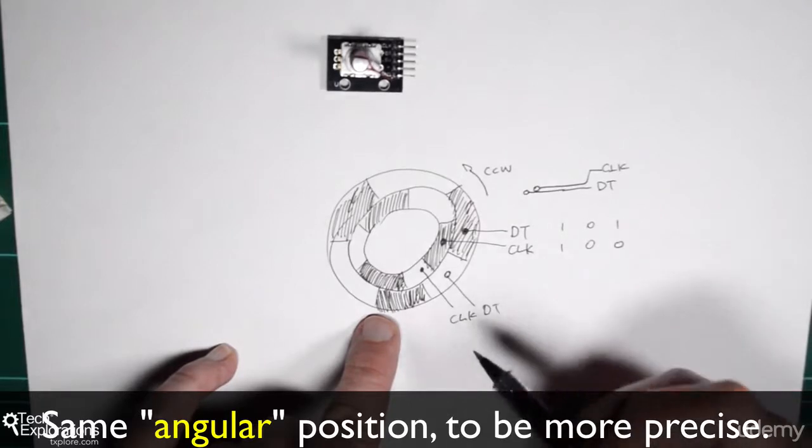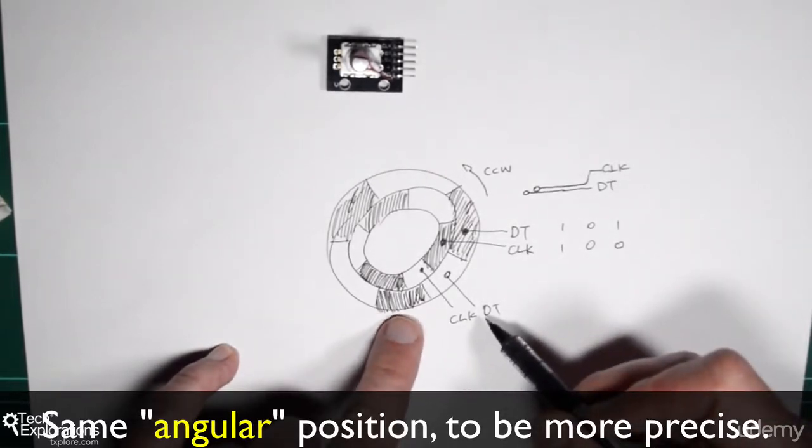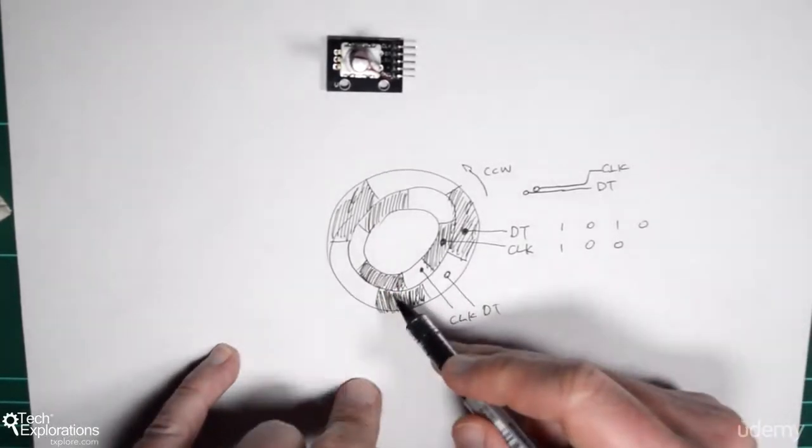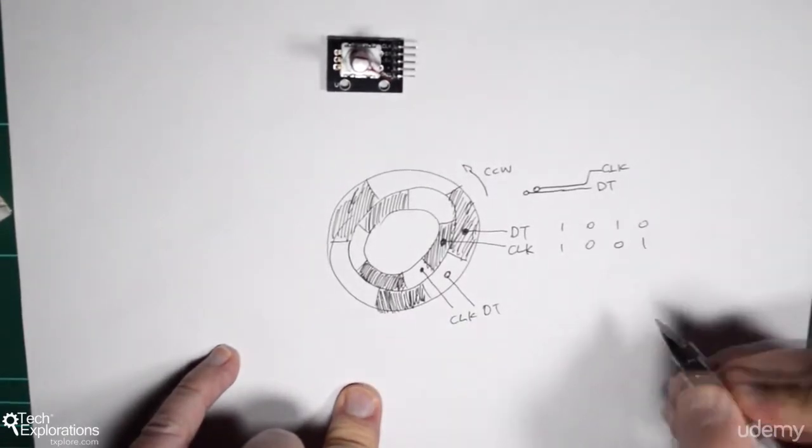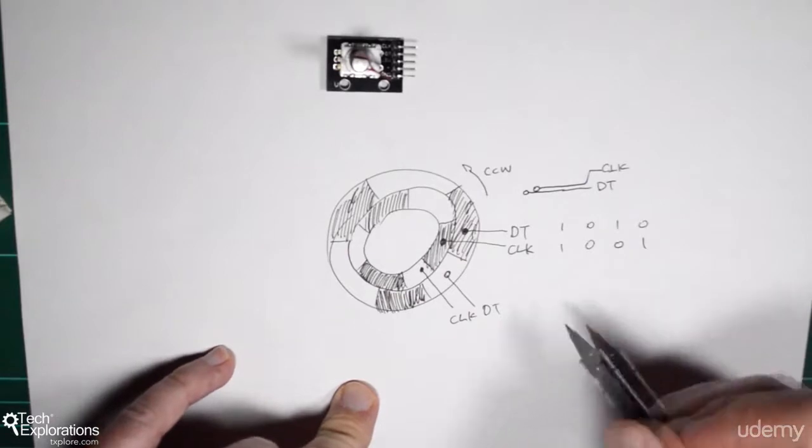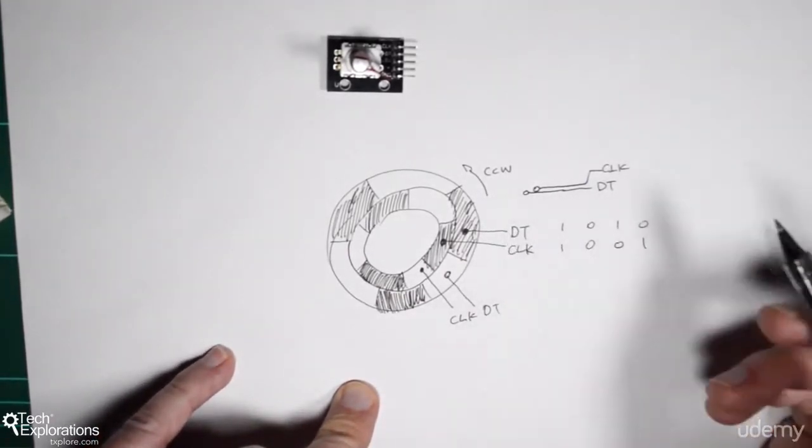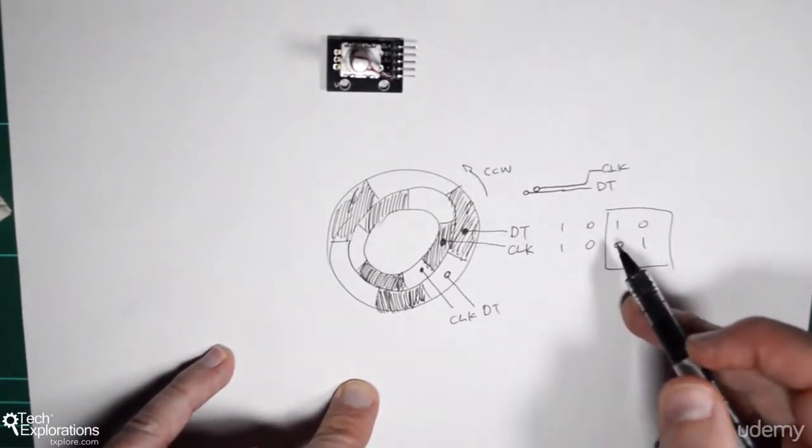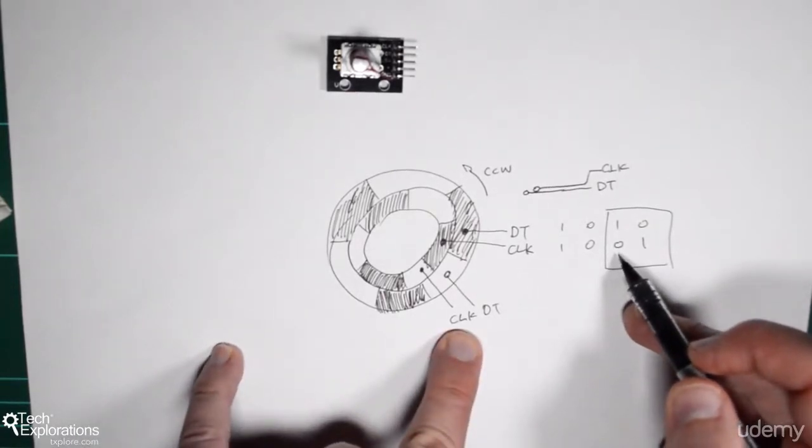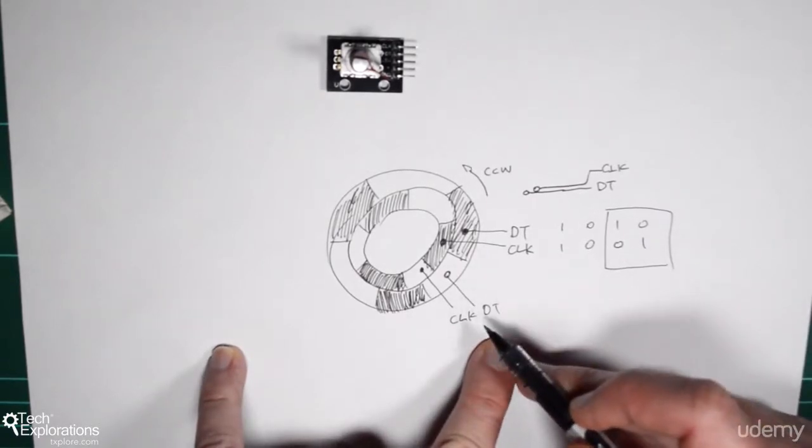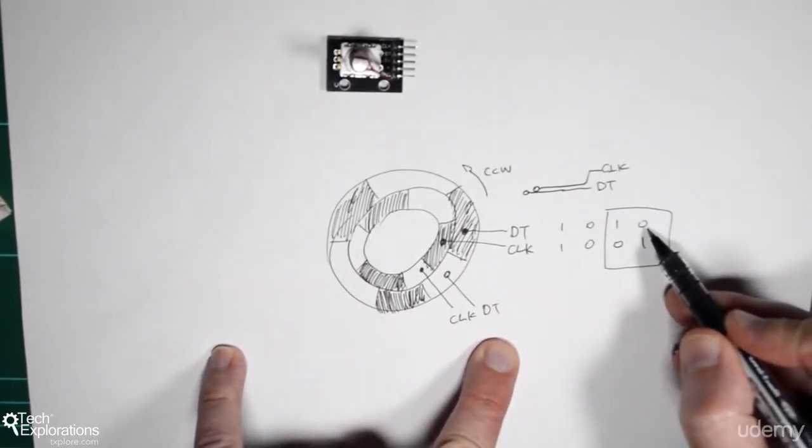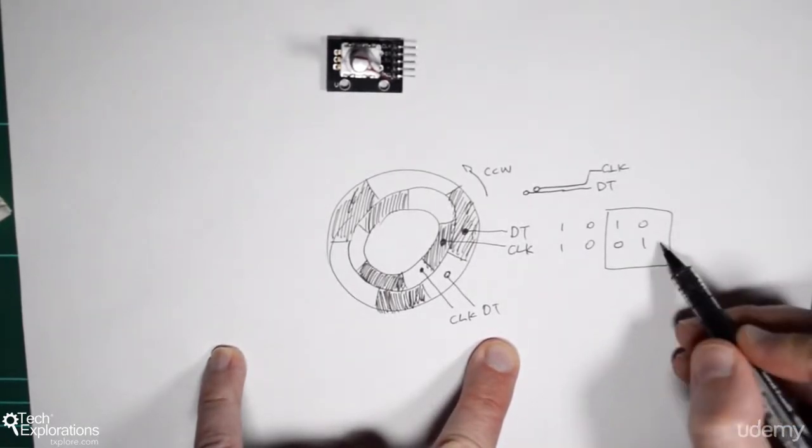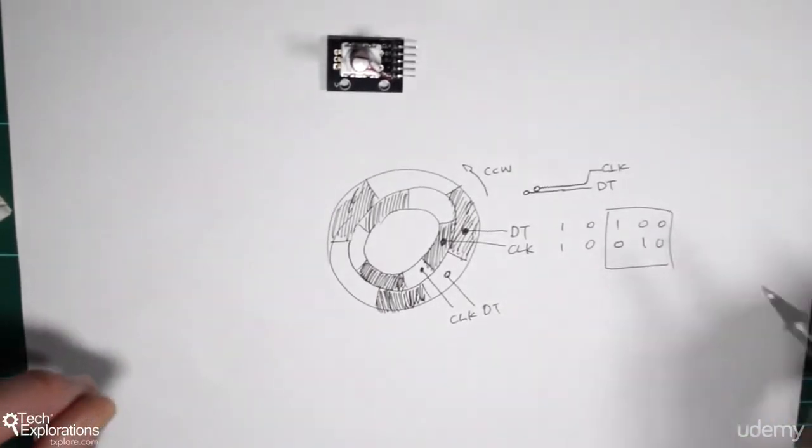Now a little bit later, as the wheel is turning, the DT is going to run out of conductive pad and it's going to become zero, while CLK is still on its own conductive pad and it's going to still be one. So you can see that when the wheel is turning, when the disk is turning counterclockwise, this is what's happening. DT is becoming one first, while CLK is still zero. And then when they exit on the other side of the pads, DT is going to become zero first and CLK is going to still be one until eventually it becomes zero and both of them are zero in between pads.